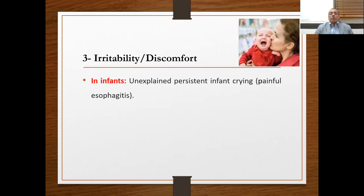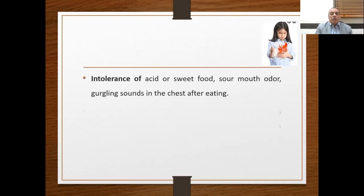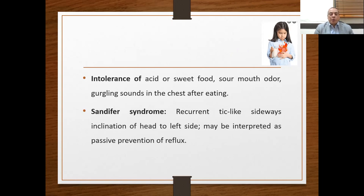Irritability and discomfort is a very common presentation — infants present with unexplained persistent crying. In older children, retrosternal burning pain may be present as in adults, though it is not common. The most common presentation is recurrent upper abdominal pain, food intolerance to acid or sweet foods, sore mouth odor, and gurgling sounds in the chest after eating. Sandifer syndrome — recurrent tick-like sideway inclination of the head to the left — may represent the child's passive attempt to prevent reflux, and is a common presentation.